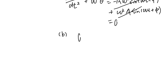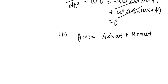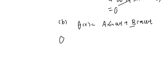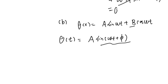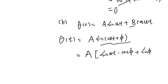For the second part, we're going to show that theta of t can be written as A'·sin(omega t) plus B'·cos(omega t) for some constants A' and B'. Notice theta of t equals A·sin(omega t + phi). Using the trigonometric addition identity, sine of (omega t + phi) can be expanded as sine(omega t)·cosine(phi) plus cosine(omega t)·sine(phi).